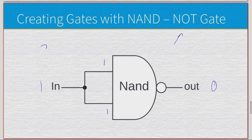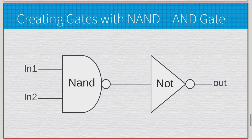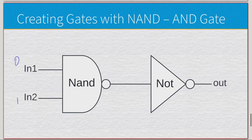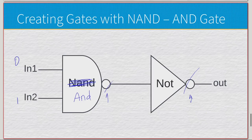Now we have a NAND gate and the NOT gate we just built. To create AND: take a NAND gate and follow it with a NOT gate (inverter). The NAND gate includes a built-in negation, so adding another inverter at the output and applying the double involution law — double negation cancels out — leaves us with a simple AND gate. So we can make AND using just NAND gates.